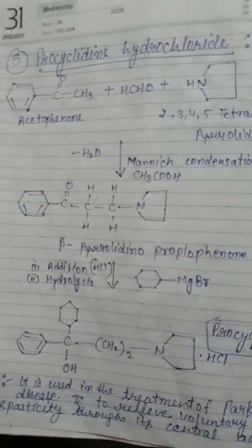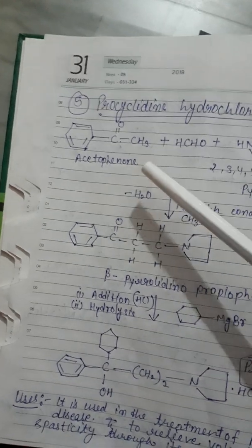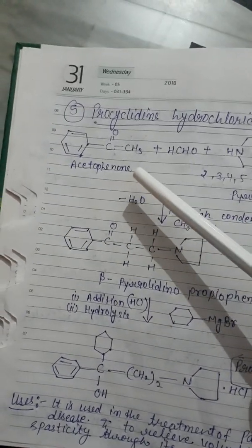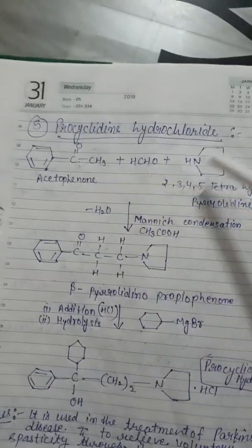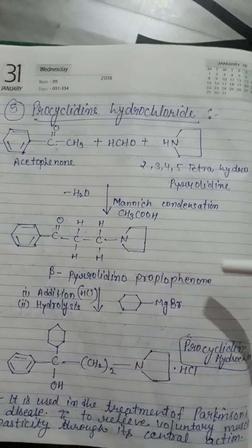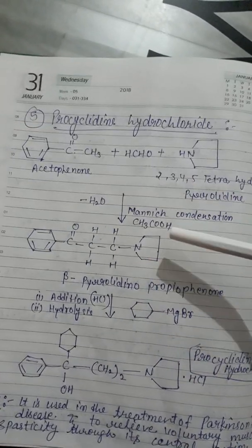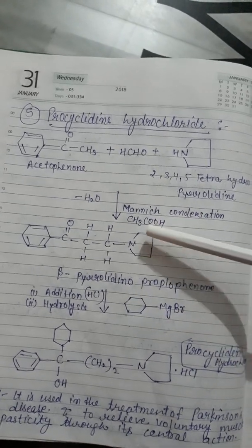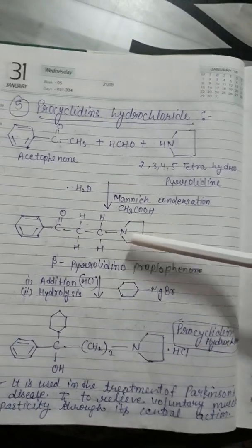Now we come to procyclidine hydrochloride synthesis. Acetophenone and formaldehyde are reacted together in the presence of 1,2,3,4-tetrahydropyridine. These three products react together to form beta-pyrrolidinopropiophenone as an intermediate product. This reaction is known as Mannich condensation.